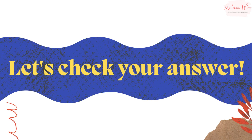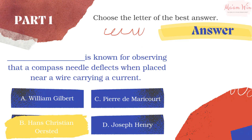Let's check your answer. The right answer is letter B. This important discovery was the first evidence of the connection between electric and magnetic phenomena. He was also the first to prepare pure aluminum.